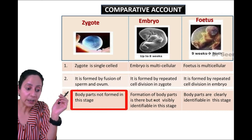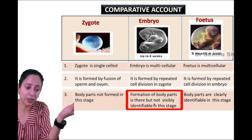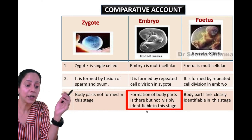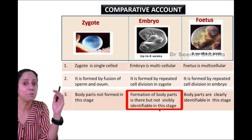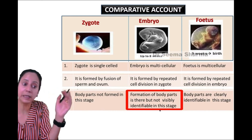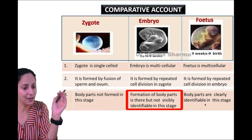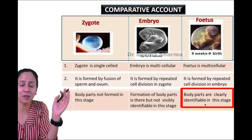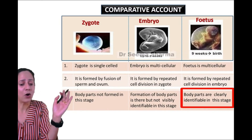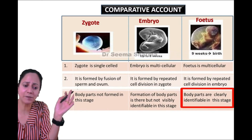Third point: in the case of the zygote stage, body parts are not formed. In the case of the embryo, formation of body parts is there, but they are not visibly identifiable at this stage. Whereas in the case of the fetus, body parts are clearly identifiable.